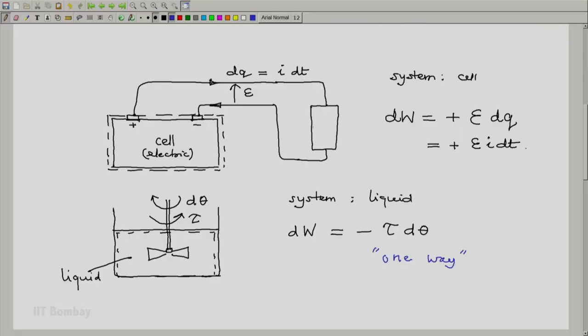Now many cells, particularly those in our laptops, mobiles, tablets, and some torches, are rechargeable. In the sense that they can discharge and work on a load. For example, it can drive our laptop or work our mobile. In which case the work done by our cell, the system, will be positive. The cell will be doing work on its surroundings, which would be, say, the mobile phone.